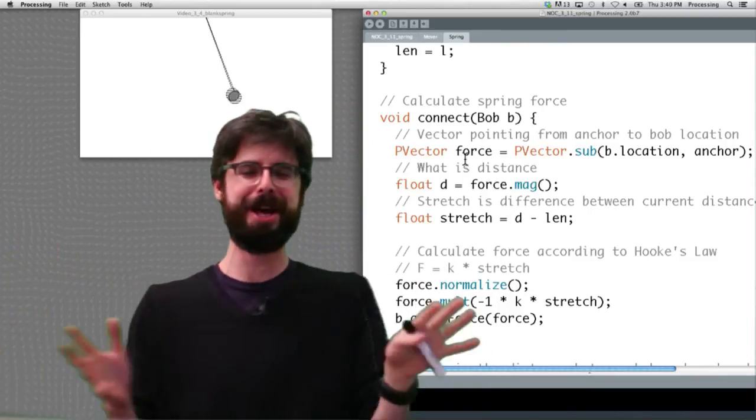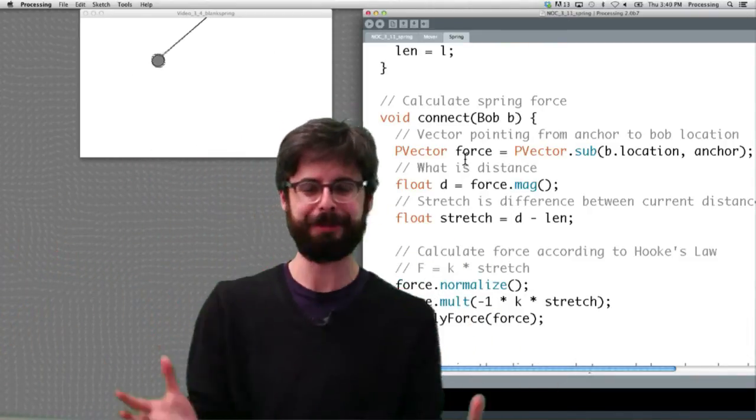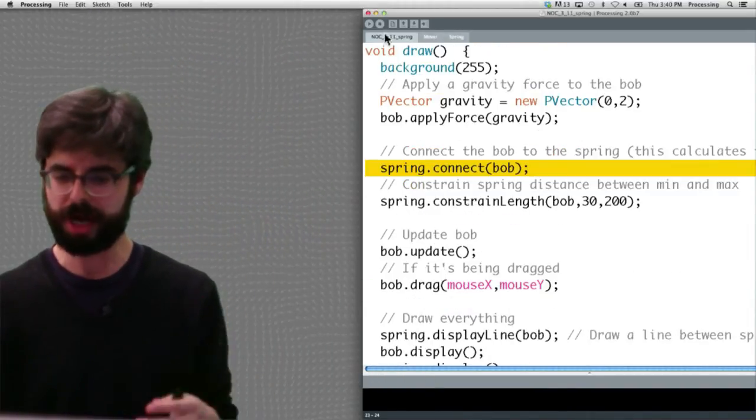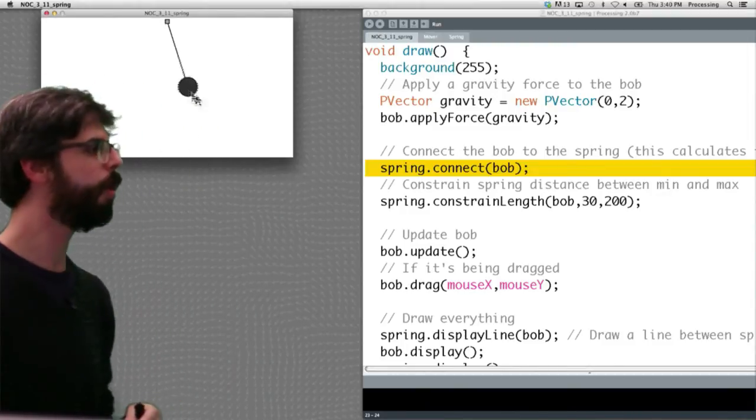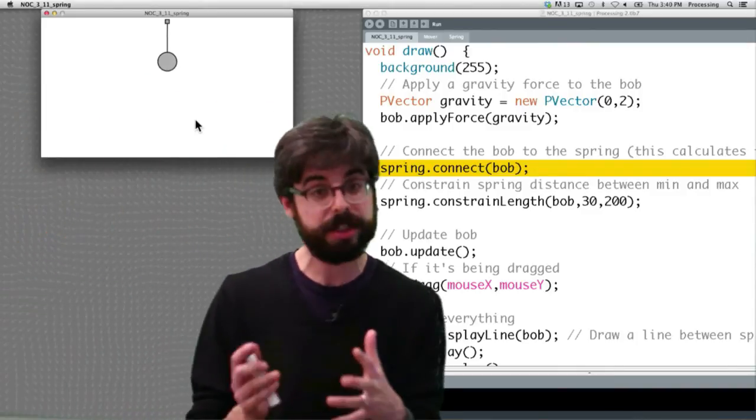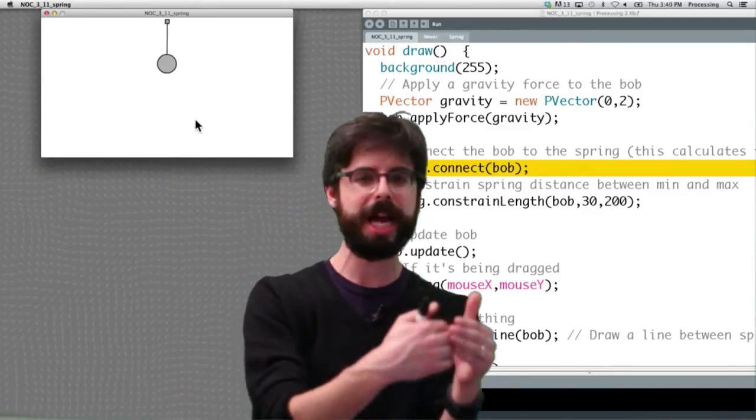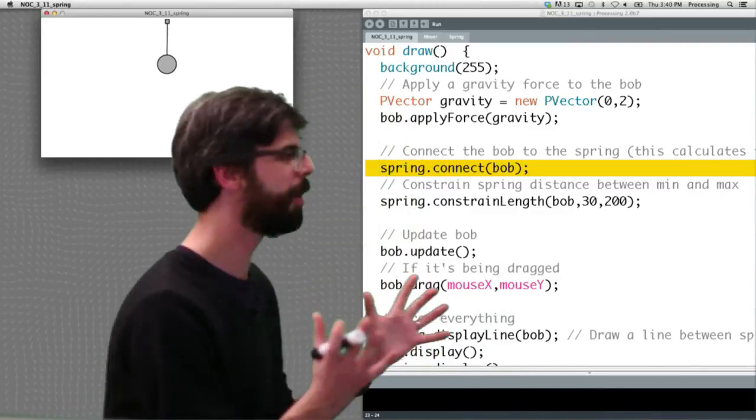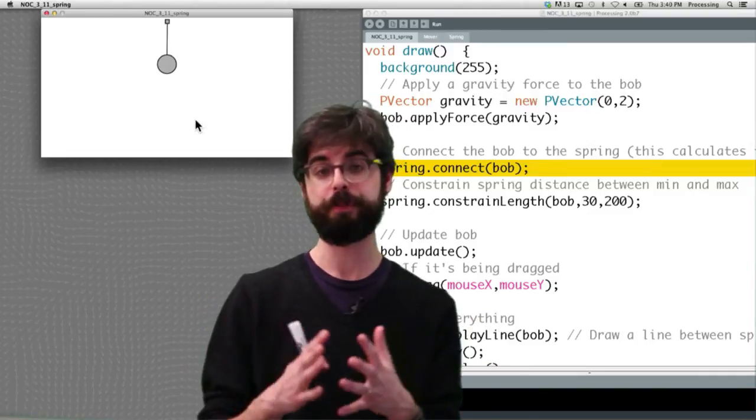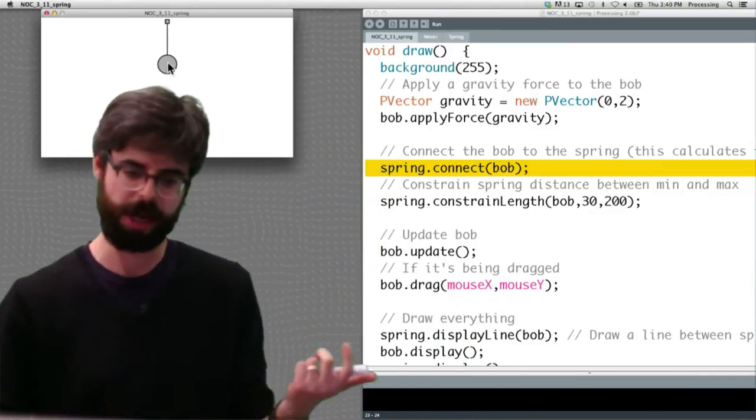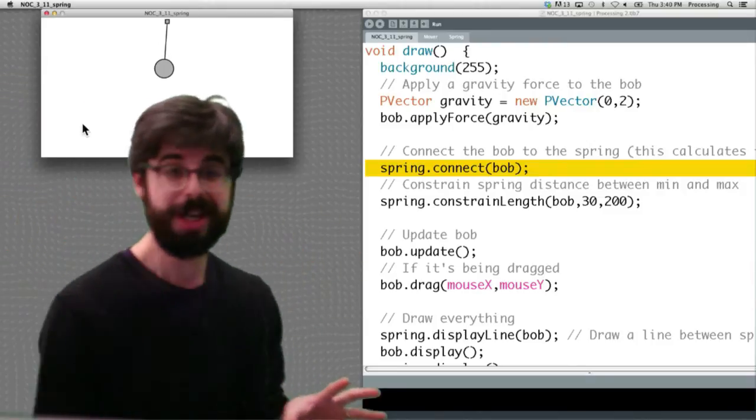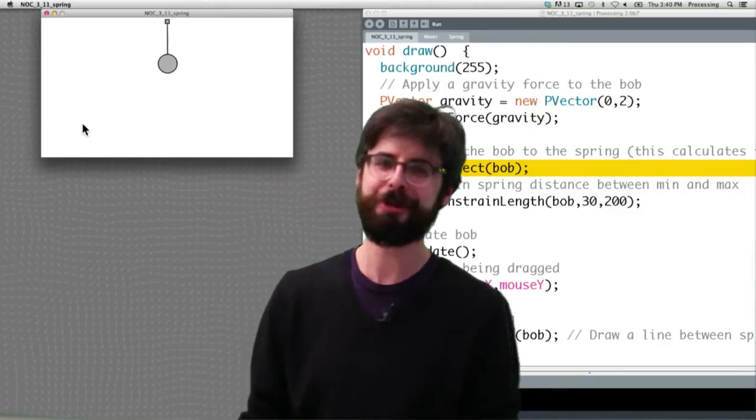There is an example that I'm hoping is prepared right here in the draw function. This is the line of code. This is now example 3.11. You can see here we can say spring dot connect bob. This is now a system where we have a bob object and a spring object. We make the spring with a location and a rest length, and we make the bob, and then at any point we can say spring dot connect bob. So that's the function that handles, where's the bob, where's the spring, what's the current length, compare that to the rest length, calculate that force, apply it to the bob. That all happens inside that function. This is the exact same algorithm that we typed out ourselves. All of that happens in that function. I think this is a really flexible scenario.